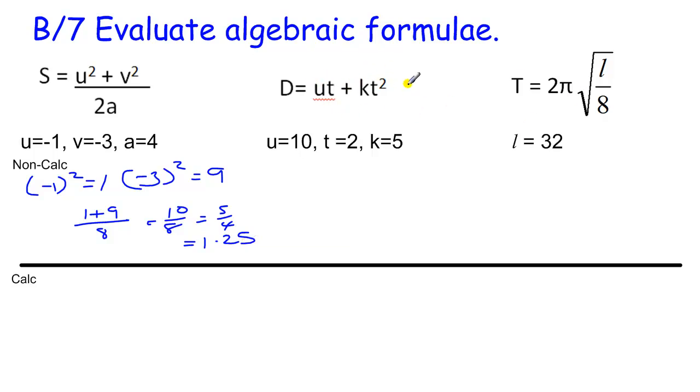Next one, a common error that occurs here with the kt squared is thinking there is a bracket around the k and the t and doing that before you square. If there is no bracket, then you must square before you times. The rules of operations mean you must square before you times.